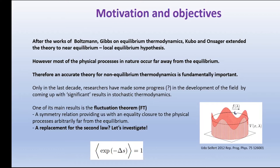An accurate theory of non-equilibrium thermodynamics requiring a considerable departure from equilibrium is very little developed even today. It is only in the last decade that researchers have claimed to make some important progress — and I would like to put a question mark here, because this progress has to be properly qualified in the development of the field. One of the seemingly significant results is the fluctuation theorem. Let us come to that — this is the universality clause I was talking about.